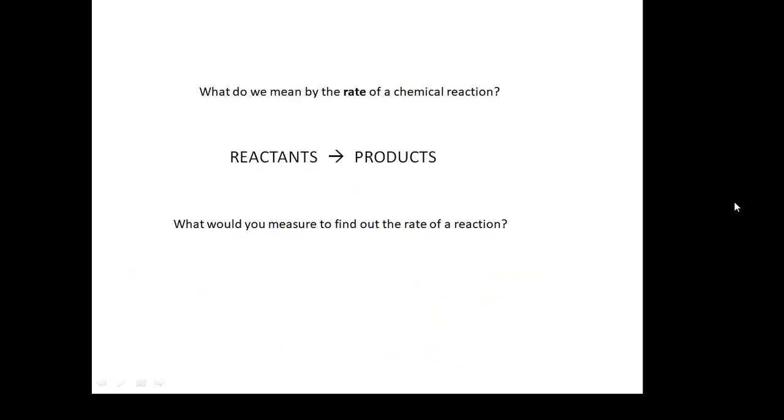What do we mean by the rate of a chemical reaction? It's how quickly the reaction happens. You start with things which react together, called the reactants, and stuff is produced, called the product. So reactants go to products. How quickly does this happen? What would you measure to find out the rate of a reaction? Basically, how quickly the reactants are used up. You could measure the mass of the reactants, possibly. And how quickly, in other words, how much divided by time, how quickly the products are produced. Again, possibly measuring the mass of the products or the volume of the products.